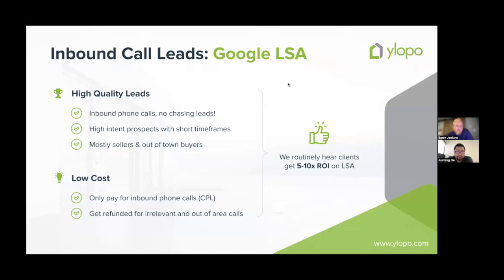These are inbound, high-quality leads because they're inbound phone calls — you don't chase them. They're high-intent prospects with short timeframes because they're already looking for a top realtor in an area. They also skew heavily toward sellers and out-of-town buyers, since someone searching for a realtor rather than homes for sale has a higher propensity to be a seller. You only pay for actual inbound phone calls.